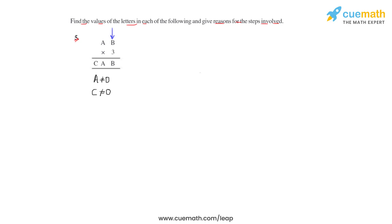In the ones column, when B is multiplied by 3, the result is B. Let us see what are the different conditions for which this result is possible. The first one is if B equals zero.